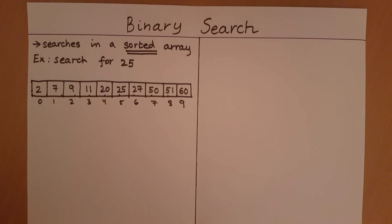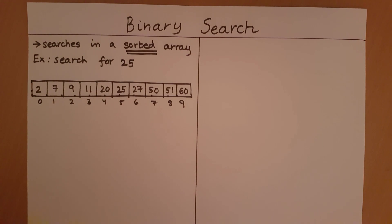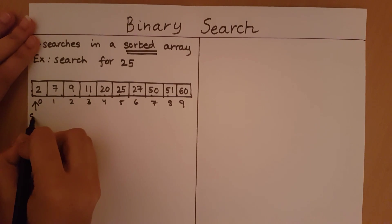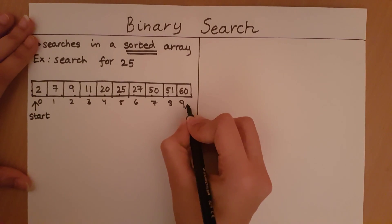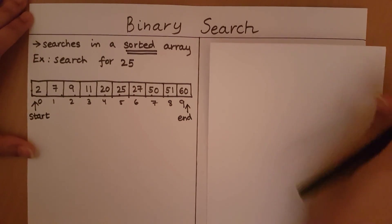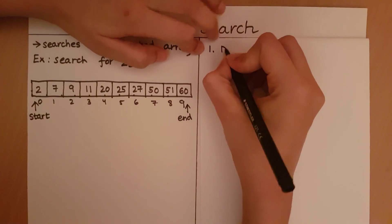The first thing the binary search algorithm will do is define the range in which it's going to search. We are searching for 25 within the entire array, so the range is going to be from 0 up till 9. The starting index is going to be called start, and the ending index is going to be called end. So the first step is: define start and end.